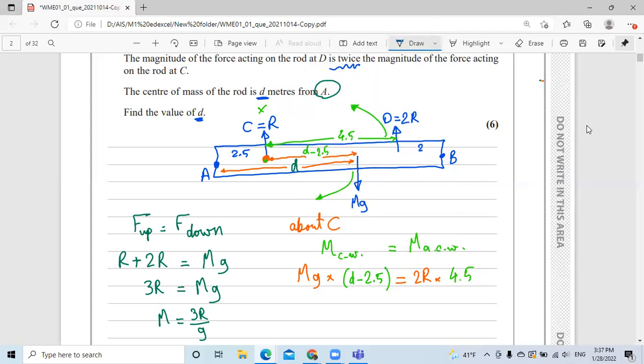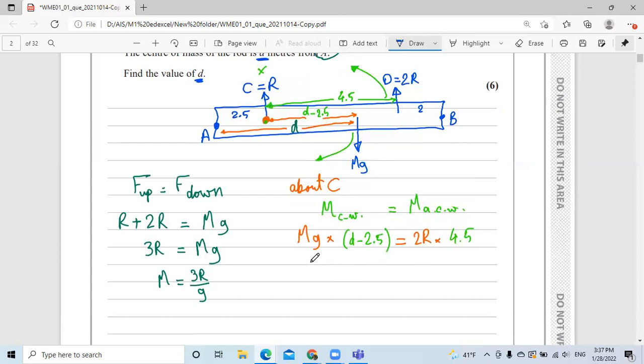We can do whatever we want, as math. So let's do the substitution here. We will substitute M in this M, and it will be 3R over G, multiplied by G, they cancel out each other, multiplied by D minus 2.5, equals 2 times 4.5, which is 9R. So G with G cancel out each other. What's left here? 3R multiplied by D minus 3R times 2.5, which is 7.5R, equals 9R.